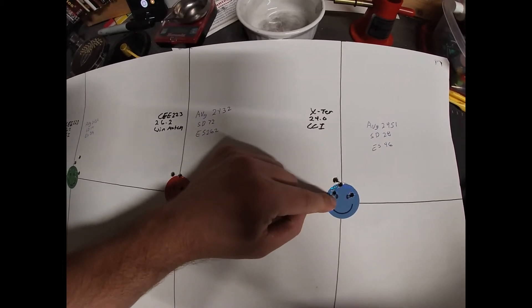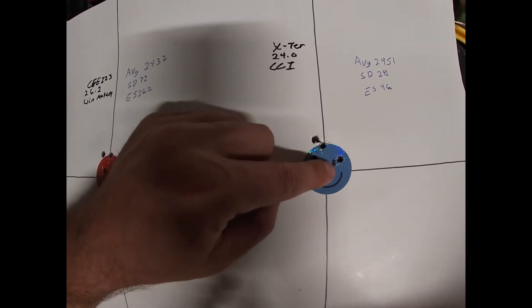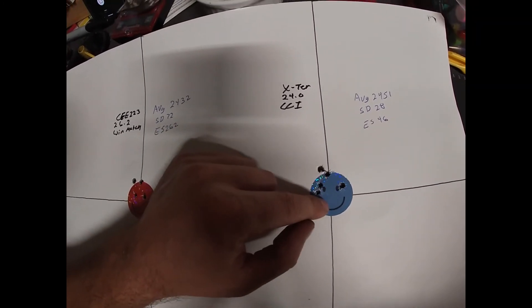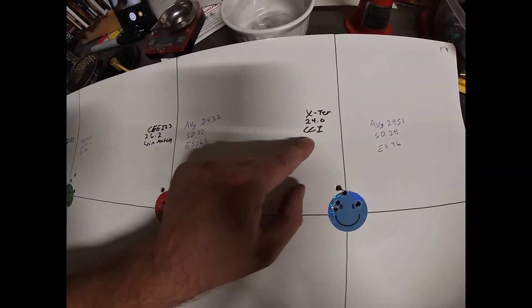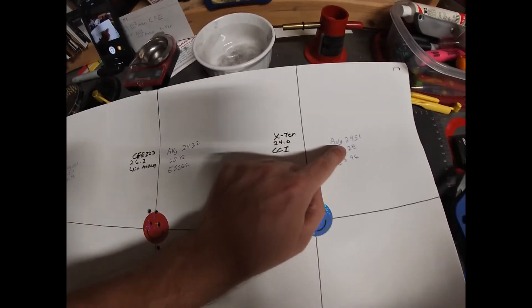And then so we've got the Exterminator powder, a Ramshot powder, 24 grains of it with the CCI primers. That's under a one inch group. That's a three-quarter inch group right there. One, two, three, four, five. That's a good group. This is why I love CCI primers.